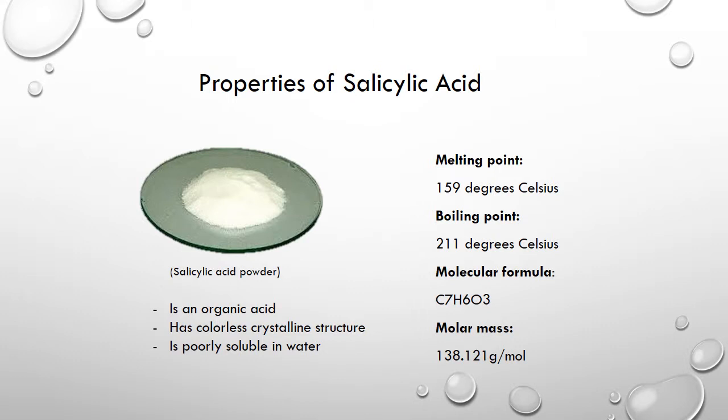The molecular formula of salicylic acid is C7H6O3. It has a molar mass of 138.21 grams per mole.